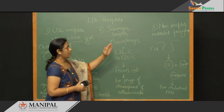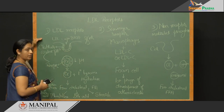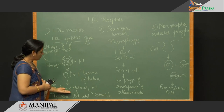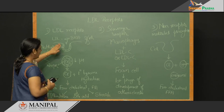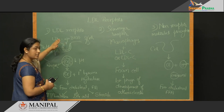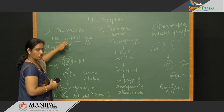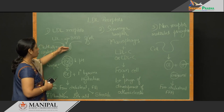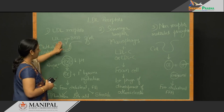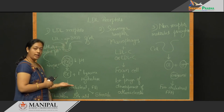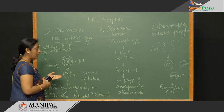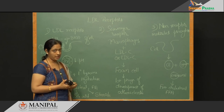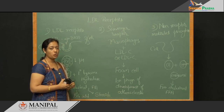Out of the three mechanisms, only the LDL receptor pathway is regulated — regulated depending upon the concentration of cholesterol. When cholesterol concentration is very high, it inhibits or suppresses the transcription of the LDL receptor gene, so there is no further production of LDL receptor. When free cholesterol level increases, it also inhibits endogenous cholesterol synthesis by inhibiting two enzymes: HMG-CoA reductase and HMG-CoA synthase. HMG-CoA reductase is the rate-limiting enzyme of cholesterol synthesis.